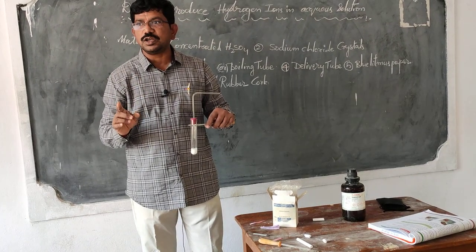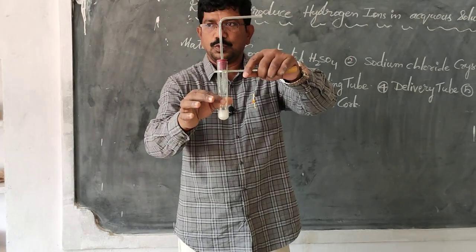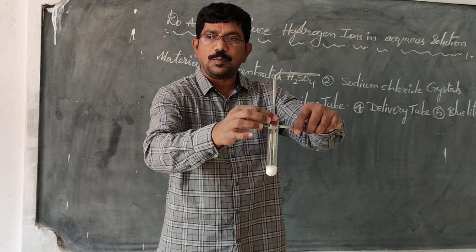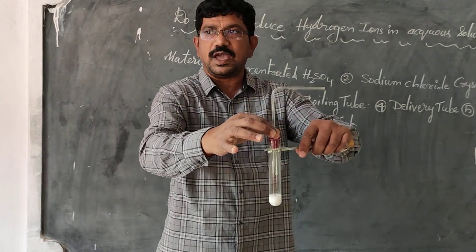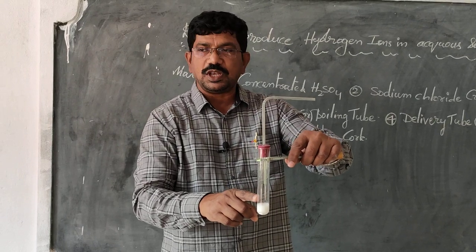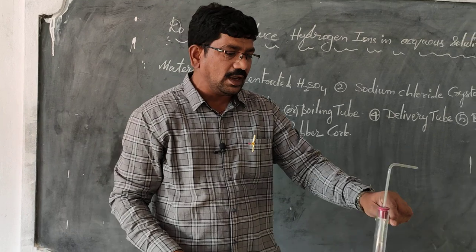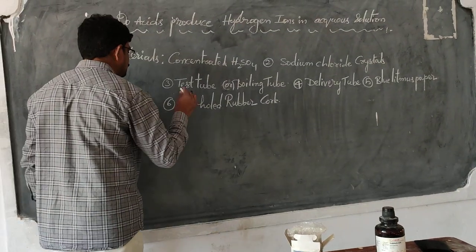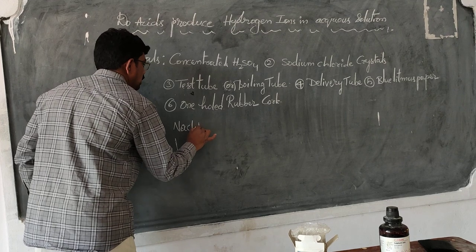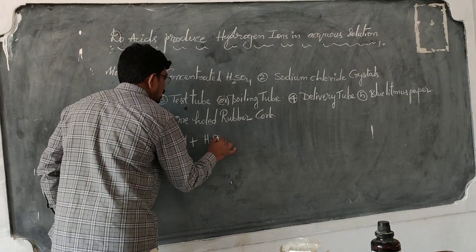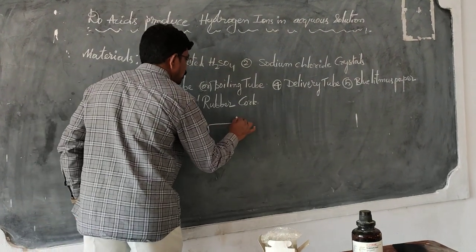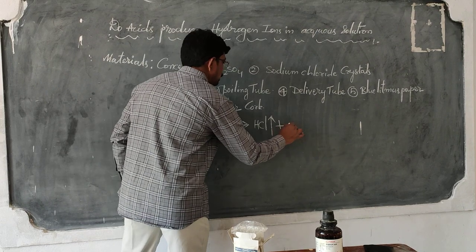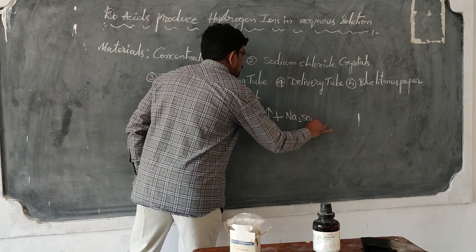Once again, what is the procedure we followed? First, I took the test tube, then I took some common salt, closed it with the one-hole rubber stopper, and arranged a delivery tube. The reaction taking place is between sodium chloride and concentrated sulfuric acid. The equation is: sodium chloride reacted with concentrated H2SO4 to give HCl gas plus sodium sulfate in aqueous solution.